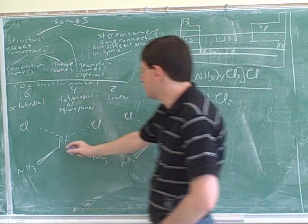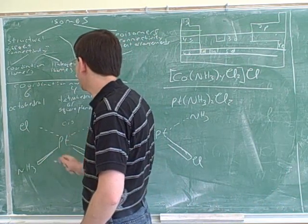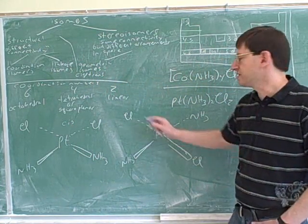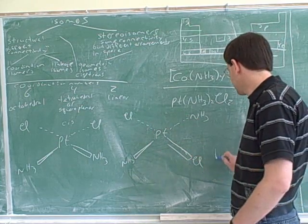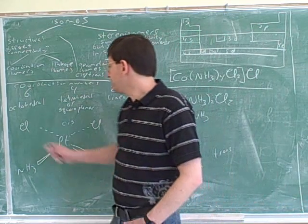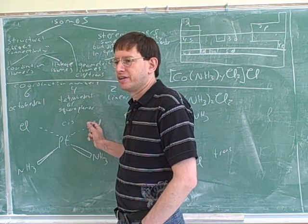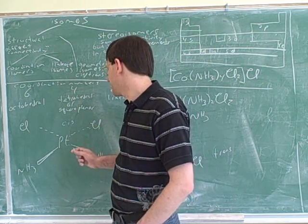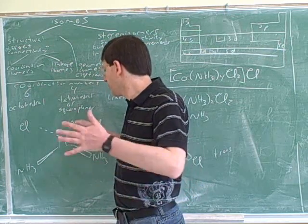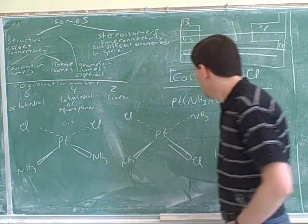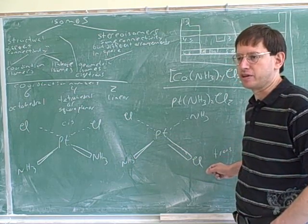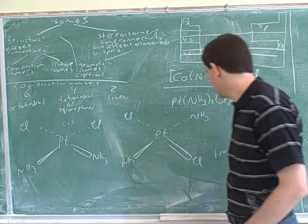These are cis-trans isomers. In this one, the two chlorines are close to each other, kind of on the same side of the molecule — that's cis. The other is easier to see as trans: the two chlorines are directly across from each other. The bond angle from chlorine to platinum to the other chlorine in the cis case is 90 degrees, and in the trans case it's 180 degrees, which is typical of trans when they're across from each other. So these really are cis-trans, and they are two different things.